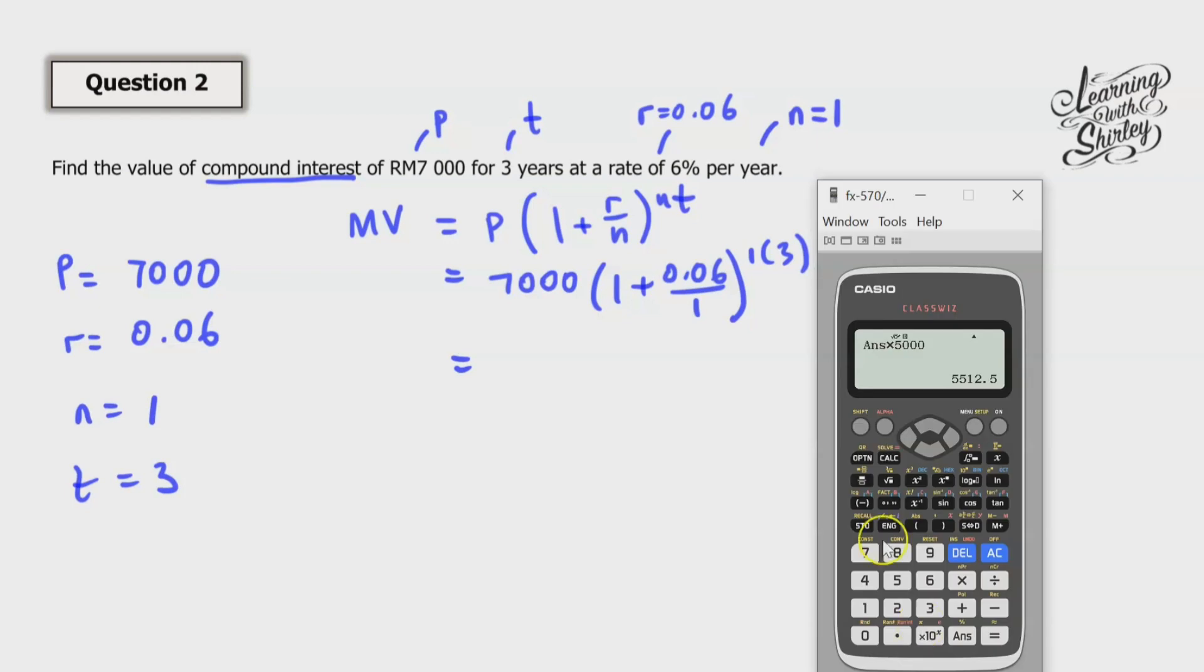Let's take out a calculator and calculate. So we calculate the 1 in the bracket first. So 1 plus 0.06. Then the answer to the power of 3. So equals. And then we multiply with 7,000. So times 7,000. So equals. 8337.11.